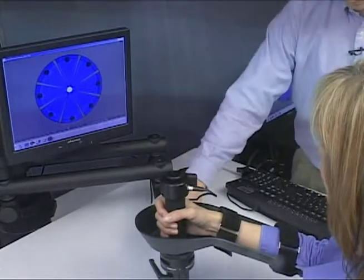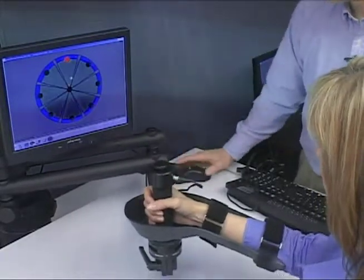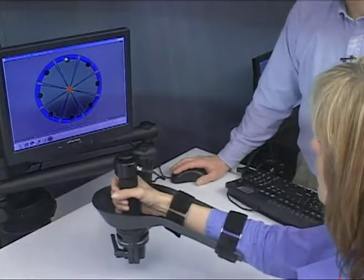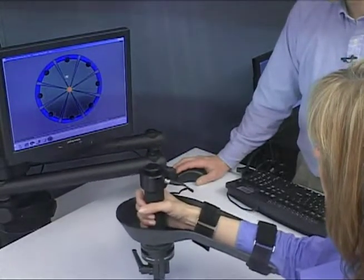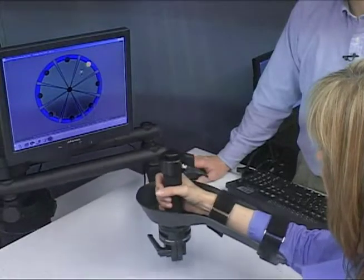So Sally, when I say go, what I'd like you to do is to move towards the blinking target. The first one will be up here at the 12 o'clock position, and if you have trouble hitting it, the robot will help you to get there.